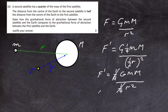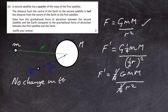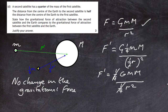Cancelling the quarters leaves F′ = GmM/R², which is exactly equal to the force experienced by the first satellite. So there is no change in the gravitational force. When doing these questions, put in the numbers, take them to one side, and see if something cancels. Remember that (½R)² = ¼R² — people often forget to square the half. The two quarters cancel and the forces are identical.